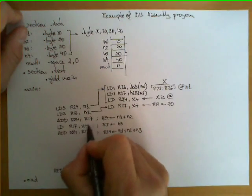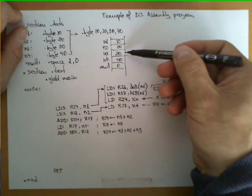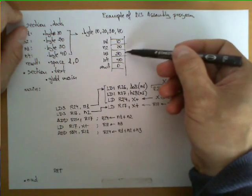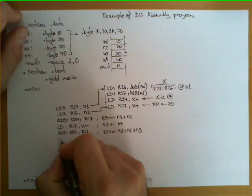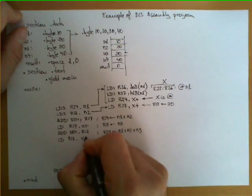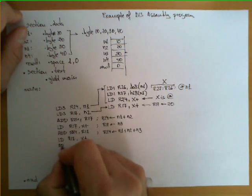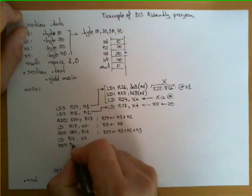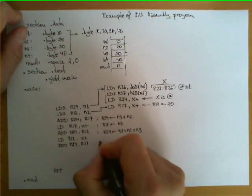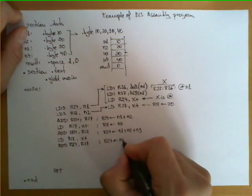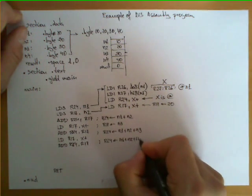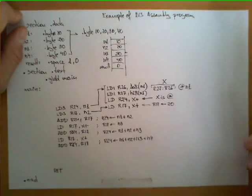And the other interesting thing is that X got incremented again, therefore now its address or its value is the address of the following number to add. So I can repeat this instruction LD R17 X plus and yet again add R24 R17 and therefore R24 now has N1 plus N2 plus N3 plus N4.